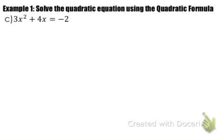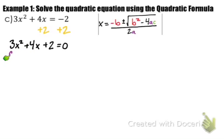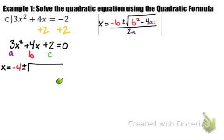For the last example, we have 3x squared plus 4x equals negative 2. First, check that it's set equal to 0 — it's not, so we add 2 to both sides and rewrite as 3x squared plus 4x plus 2 equals 0. Here a is 3, b is 4, c is 2. Substituting: x equals opposite 4, plus or minus the square root of 4 squared minus 4 times 3 times 2, all over 2 times 3.